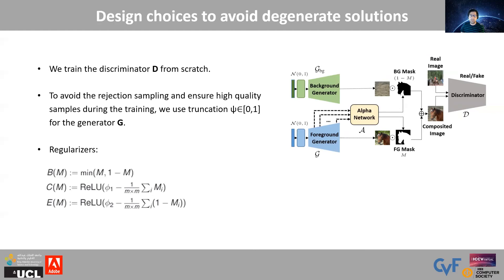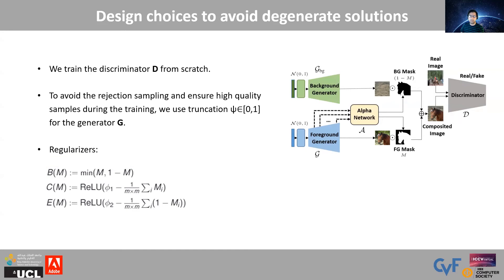We use three design choices to avoid degenerate solutions. First, we use a discriminator which is trained from scratch. Second, we use the truncation trick to avoid out-of-distribution images. Third, we use regularizers to ensure the solution does not degenerate to the foreground image. The first regularizer enforces the masks to be binary. The second and third regularizers ensure that there is contribution of both the foreground and the background image in the final composite.